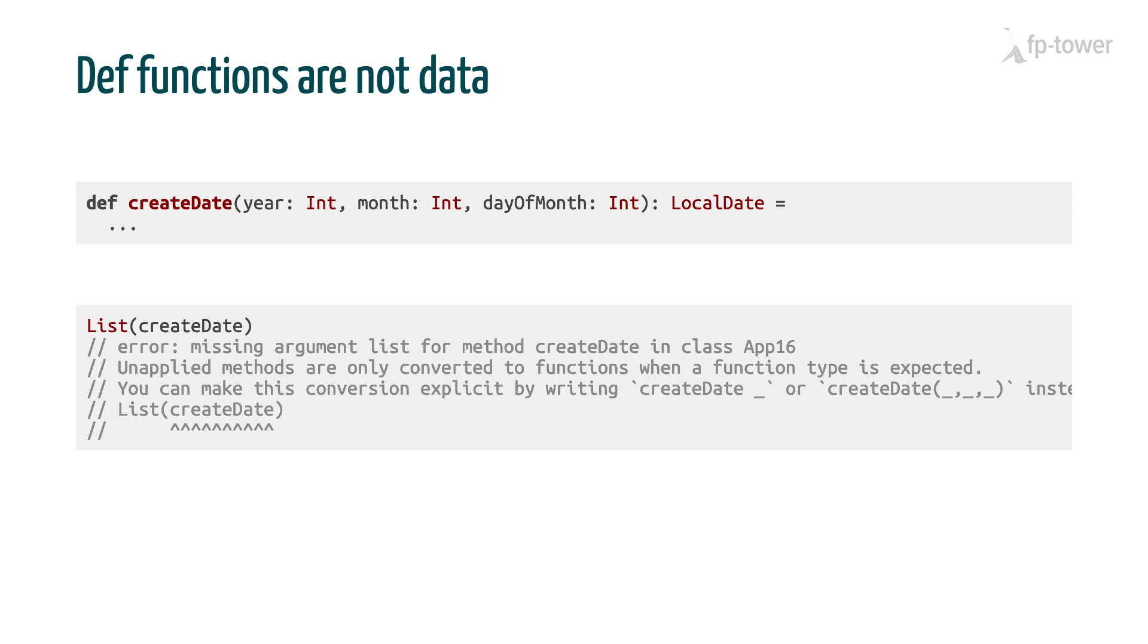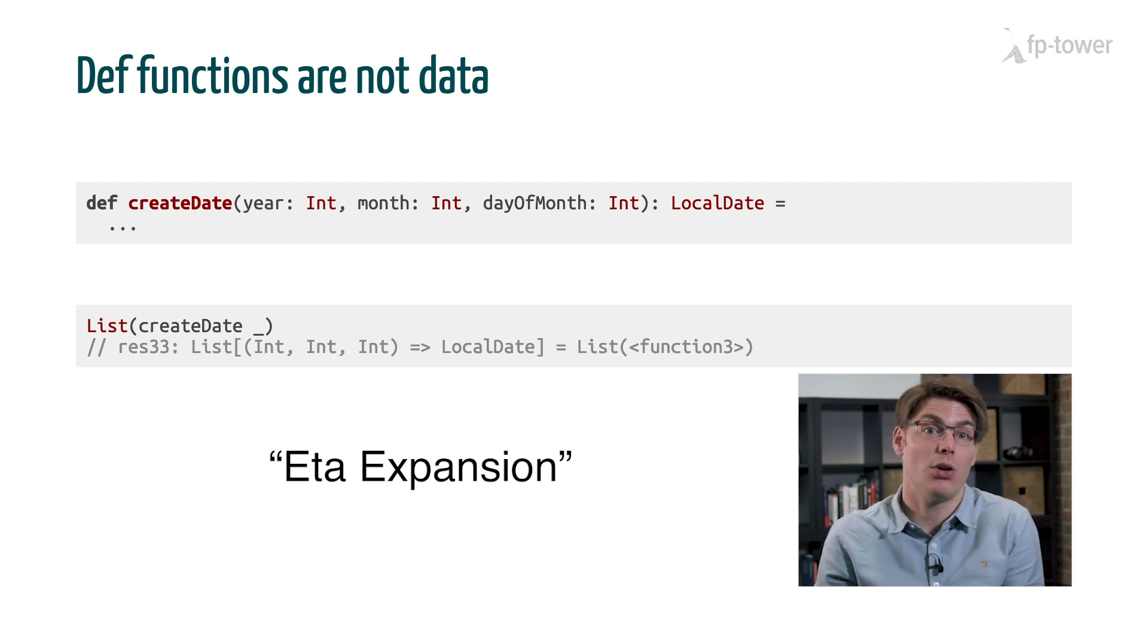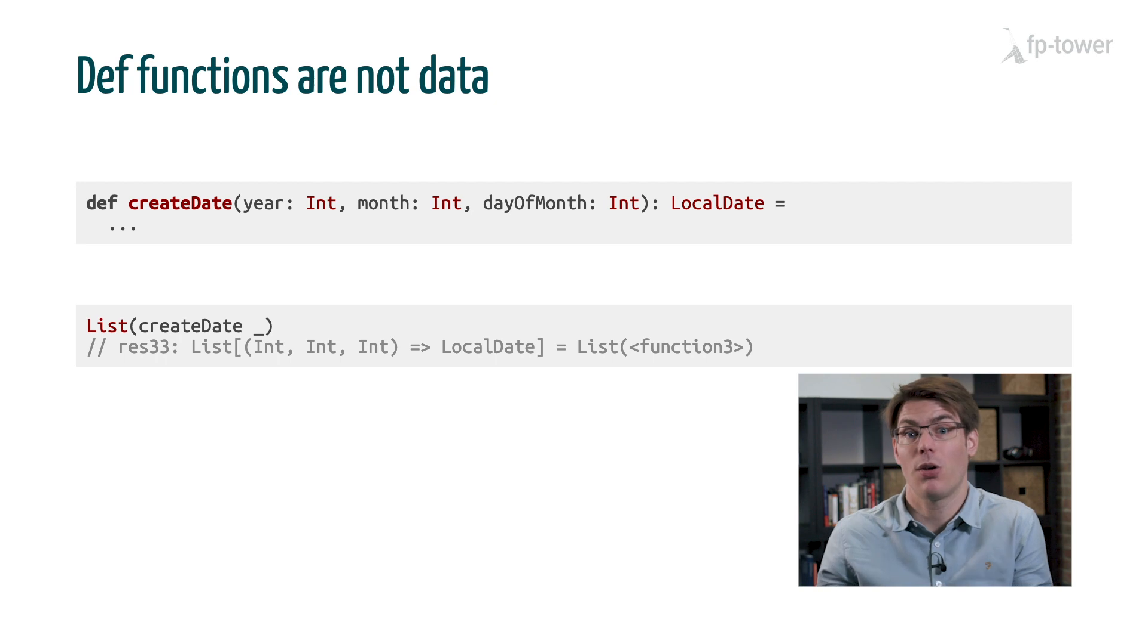In Scala, underscore means different things in different contexts. Here the underscore means, please Scala compiler, could you transform this def function into a val function? And the proper name for this pattern is an eta expansion. But to be honest, it's just a fancy name for a conversion from a def function to a val function. Nothing more.